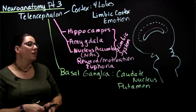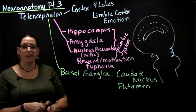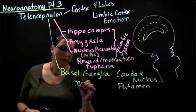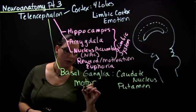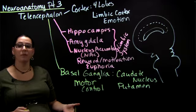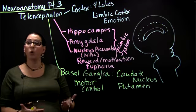So the caudate nucleus and the putamen are parts of the basal ganglia and they're important in motor control. Information from the basal ganglia go to the premotor cortex to help coordinate movements.